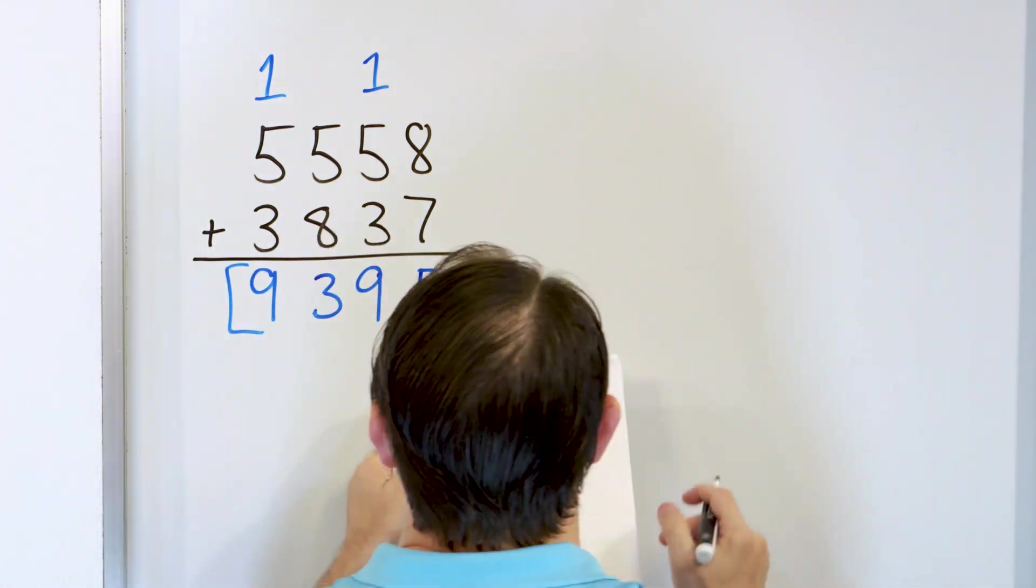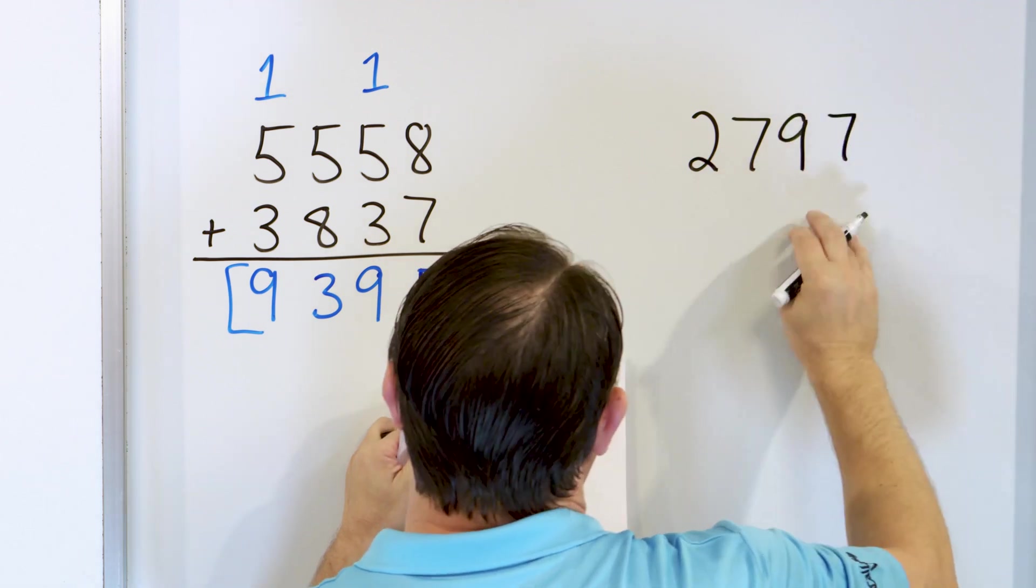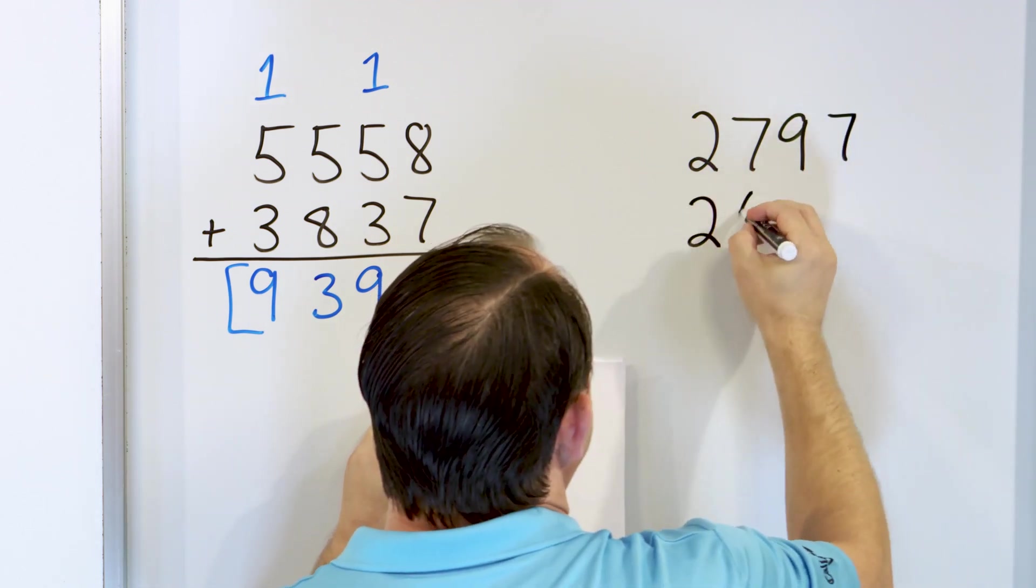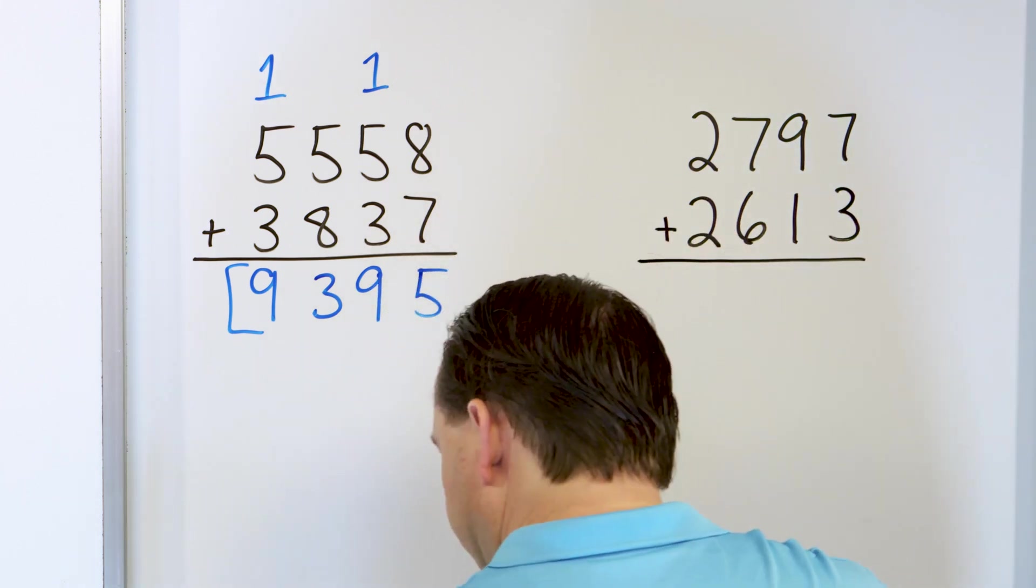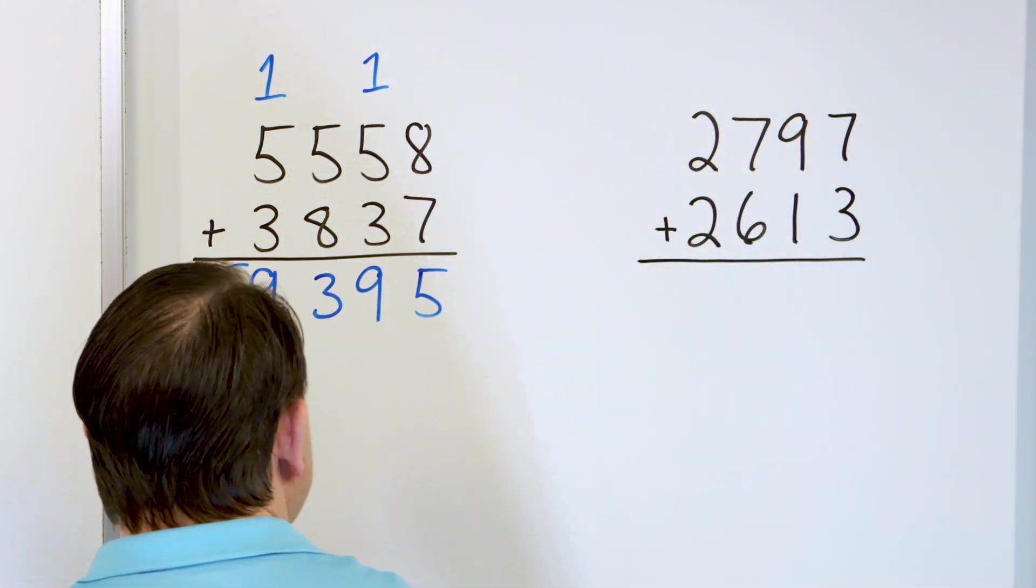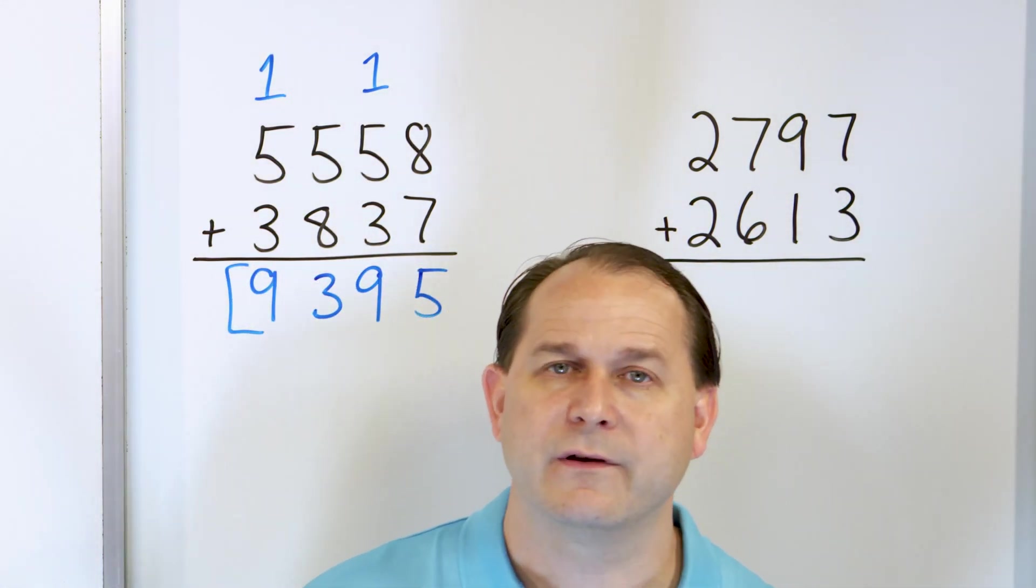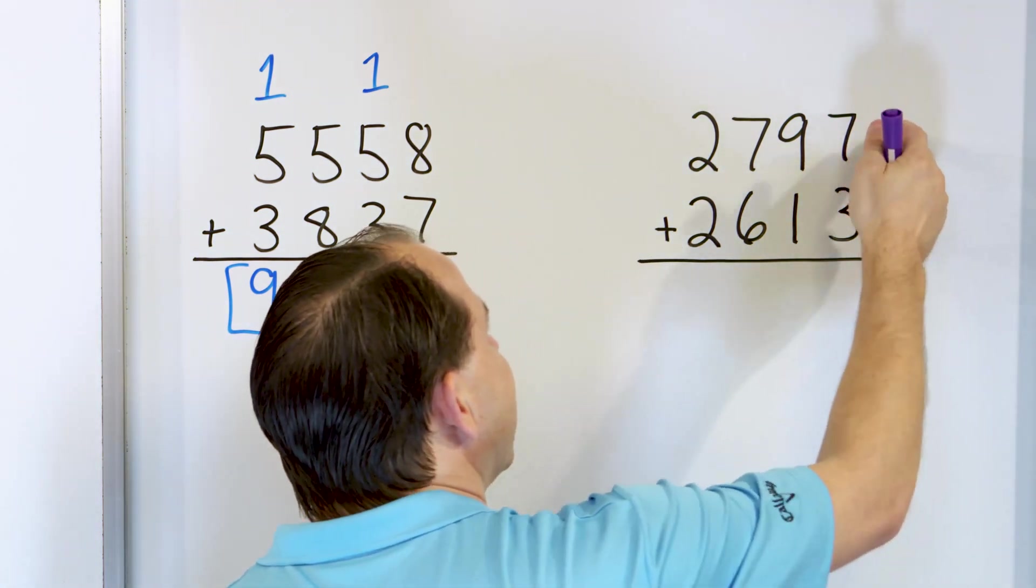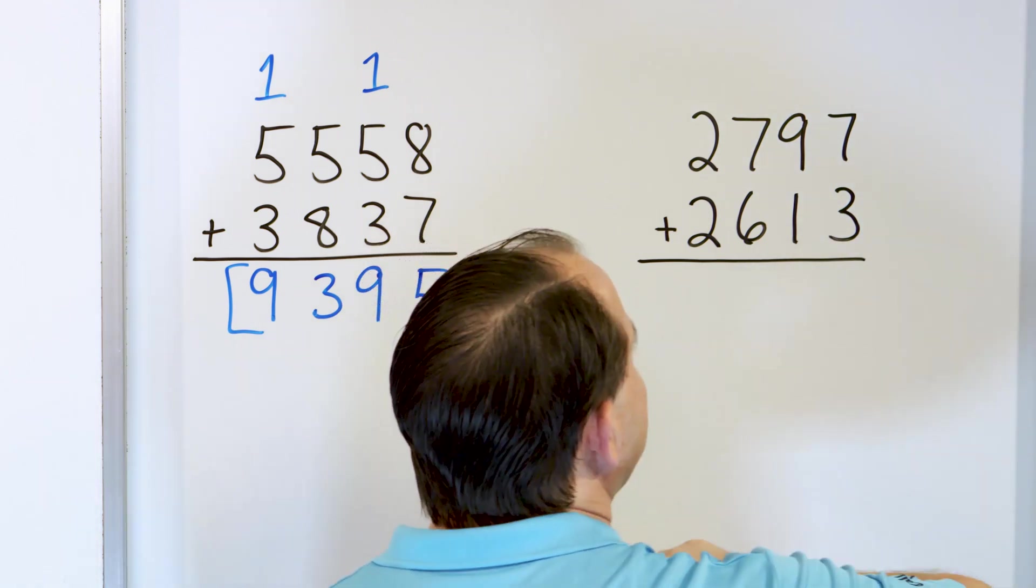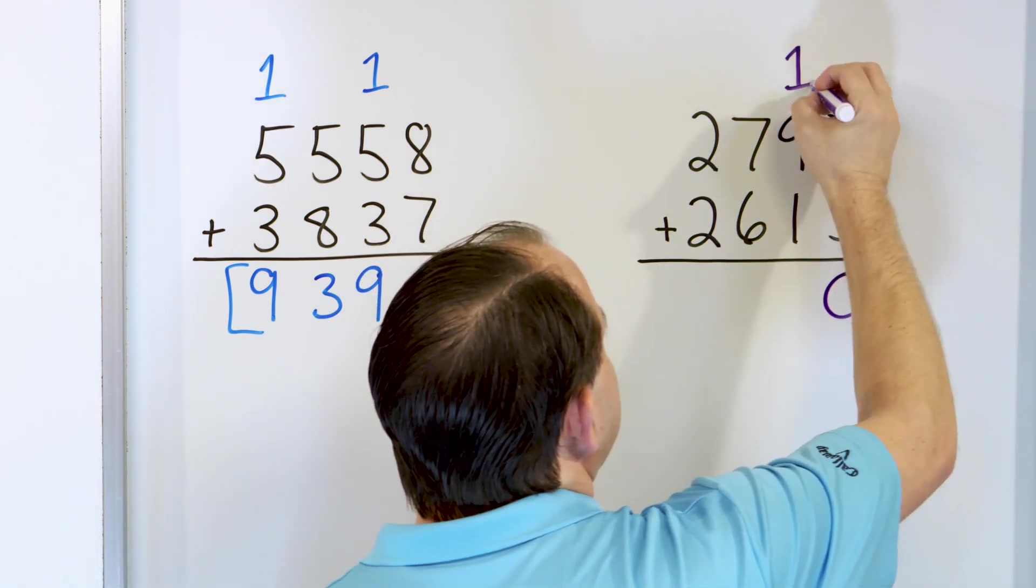Let's take a look at problem number 6. Let's take a look at 2,797. And we'll add to that 2,613. So we start, as we always do, in the right-hand column. Here we have 7 plus 3. You should recognize that as a complement. 7 and 3 go together, like peanut butter and jelly, to make 10. You can count it out if you like. 7 going 8, 9, 10, of course. But I want you to start remembering them. 10, we'll put a 0 and we'll carry the 1.